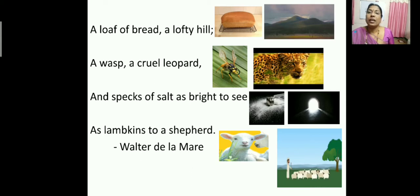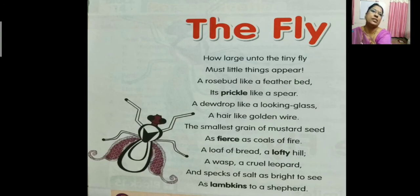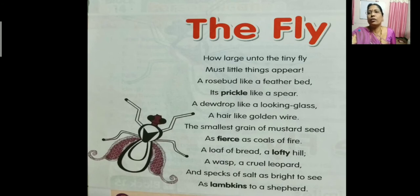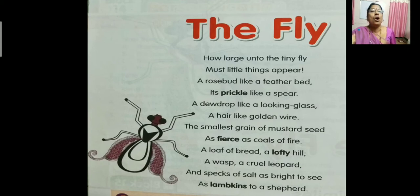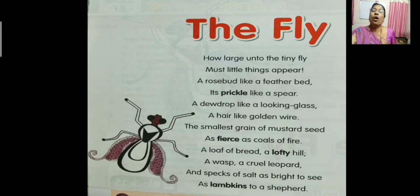This poem describes the world which appears differently to the fly. The poet has described different things from the perspective of the fly. This poem describes how the world appears differently to a fly, and it has been written from the perspective of a tiny fly.